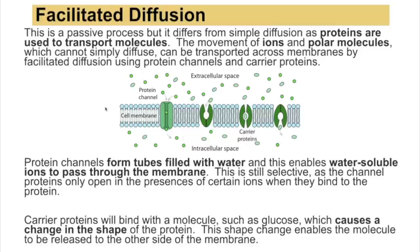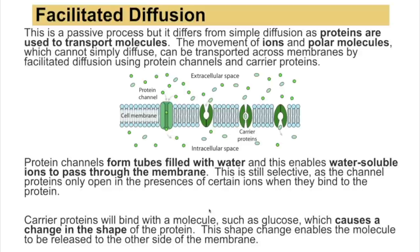Facilitated diffusion can occur through protein channels — tubes filled with water through which water-soluble ions can dissolve and diffuse. This is still selective, as channel proteins only open in the presence of certain ions when they bind to the protein. Carrier proteins bind with a molecule such as glucose, causing a conformational change that releases the molecule to the other side of the membrane.